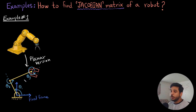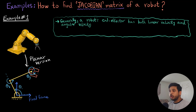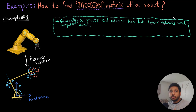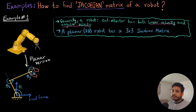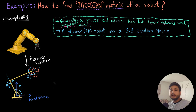Before we go on to finding the Jacobian, I wanted to bring your attention to a couple of things. Firstly, the velocity of the end effector is going to comprise two distinct velocities: the first being the linear velocity — how fast the robot moves in the x and y direction — and the other is the angular velocity, which is how fast the robot rotates. Secondly, for a planar 2D robot such as this one, the Jacobian is generally going to be a 3x3 matrix.